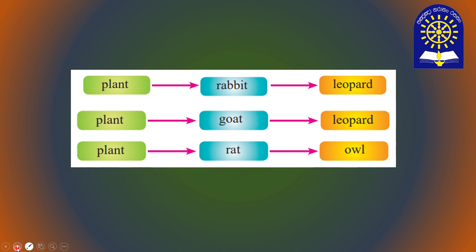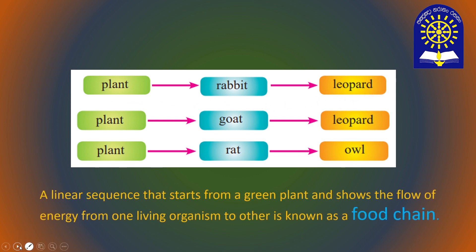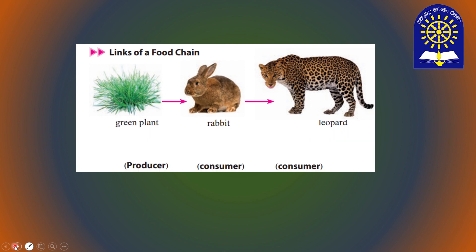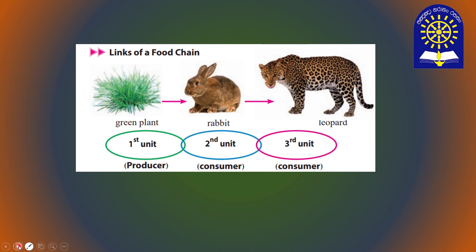Here are some examples. The relationship starts with a grain plant. A linear sequence of flow of energy is known as a food chain. Every food chain starts with a producer and the others are consumers. So there are three links or three units in this food chain.